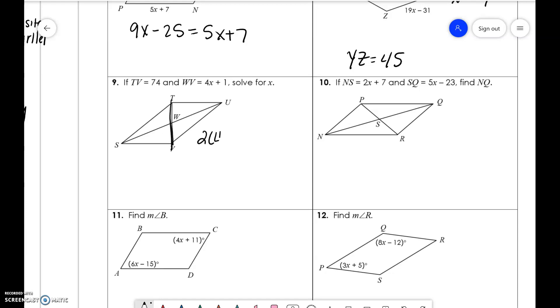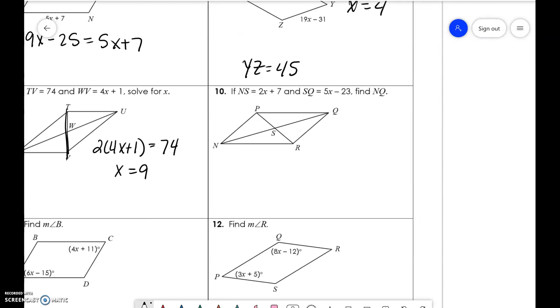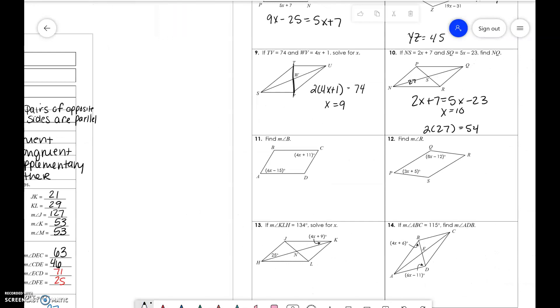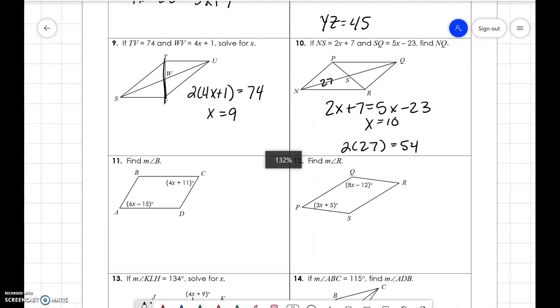Okay. So you have TZ and you know WX. So 2 times 4X plus 1, because that's the smaller part, which is equal to 74. You get X is equal to 9. And SR and SQ. That's a diagonal. They're equal. They're both parts of it. You set them equal to each other. You get X is equal to 10. Plug it into NS. So you get this to be 27. So 2 times 27 is 54.